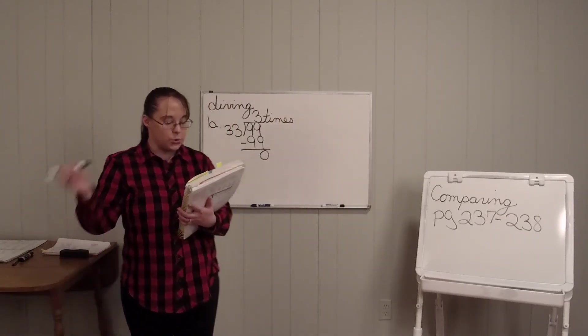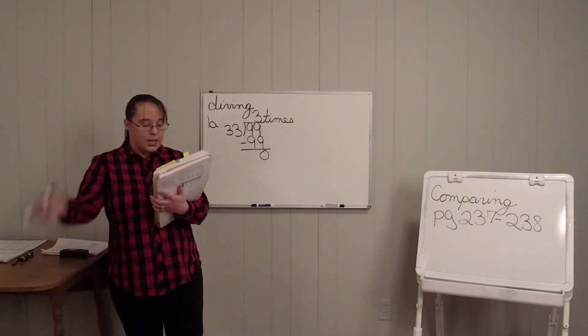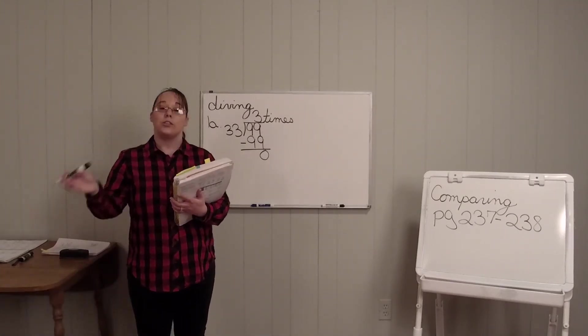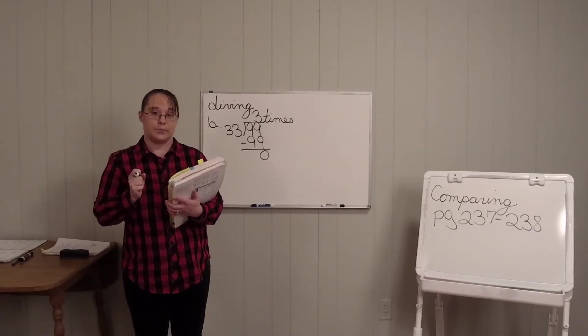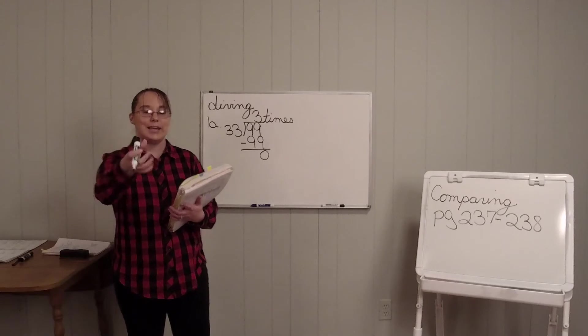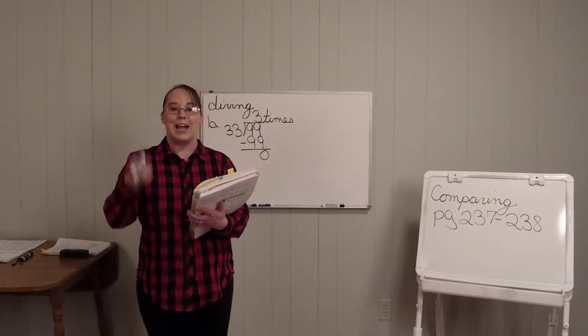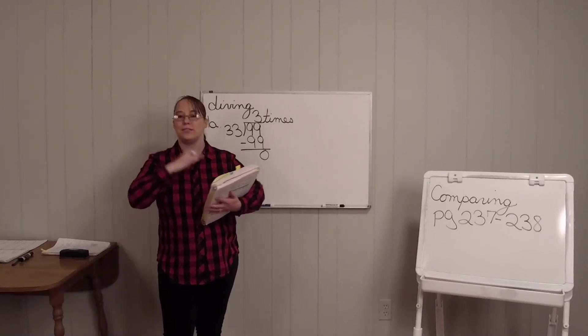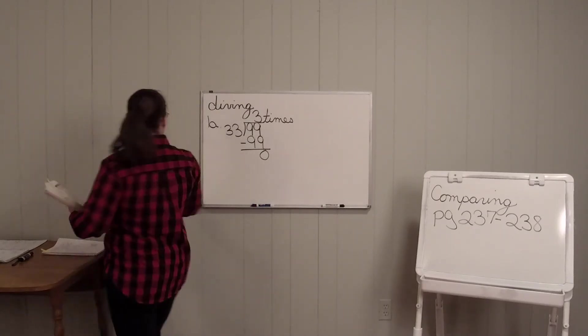So the cookies were 3 times. So 99 cookies is 3 times more than 33 brownies. So it was 3 times. All you're doing, guys, is taking those two numbers that's in the problem and dividing them. That's all you're doing is dividing.